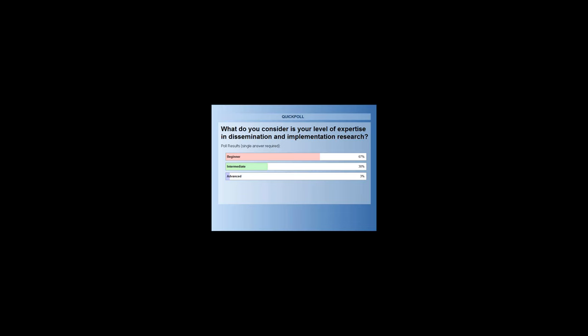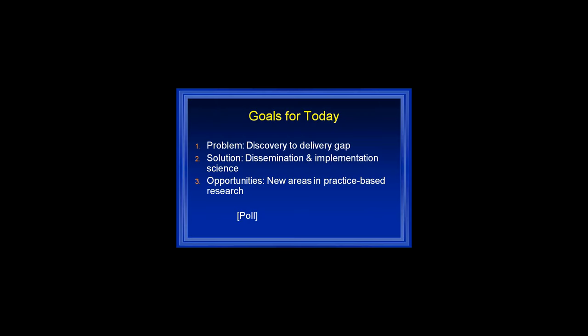So it looks like about two-thirds are beginners, 30% are intermediate, and about 3% are advanced. I didn't really define D&I research for you yet, so you're obviously answering a poll question with maybe if you're a beginner, learning more of what the actual definition is. As a formal field, this is a fairly new science really within just about the last 10 to 15 years.